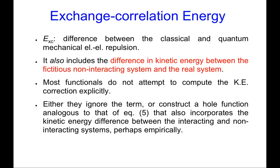It also includes the difference in kinetic energy between a fictitious non-interacting Kohn-Sham system and a real system. Most functionals don't attempt to compute that kinetic energy correction explicitly — they either ignore that term or construct a functional similar to equation 5 in an earlier lecture that somehow incorporates the kinetic energy difference, perhaps empirically. Getting kinetic energy out of a density is not at all obvious, and this continues to be an active area of development in DFT.